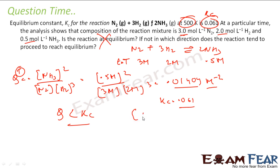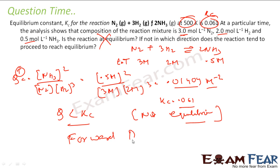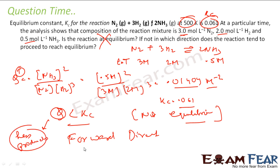Since the system is not in equilibrium, the reaction will proceed. Since QC is less than Kc, it will go in the forward direction. This means there are fewer products than at equilibrium, so the reaction proceeds forward to produce more products.